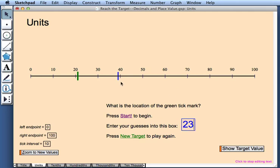Notice now what happens with the blue tick mark when I click outside of this box. The blue tick mark moved over, or scooted, to the location that I entered, namely 23.